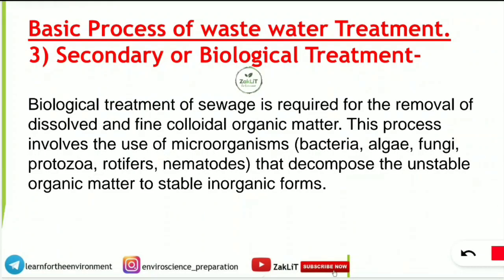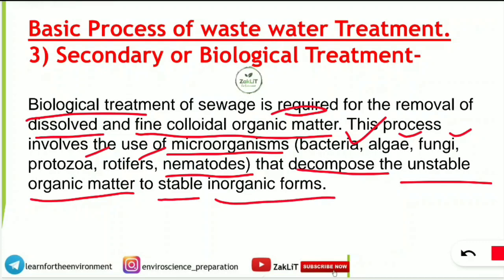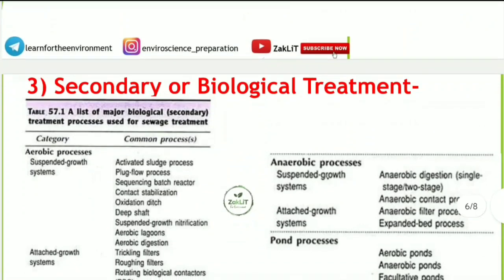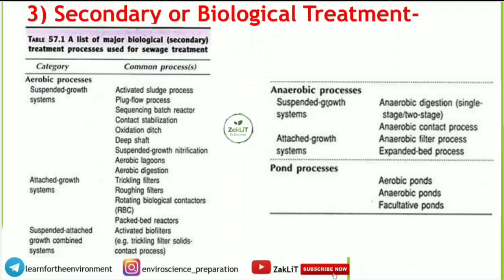The next step is secondary or biological treatment. It is called biological treatment because living organisms are used. Biological treatment of sewage is required for the removal of dissolved and fine colloidal organic matter. Microorganisms used include bacteria, algae, fungi, protozoa, rotifers, and nematodes — they decompose unstable organic matter and form stable inorganic forms, making the water more efficiently treated.